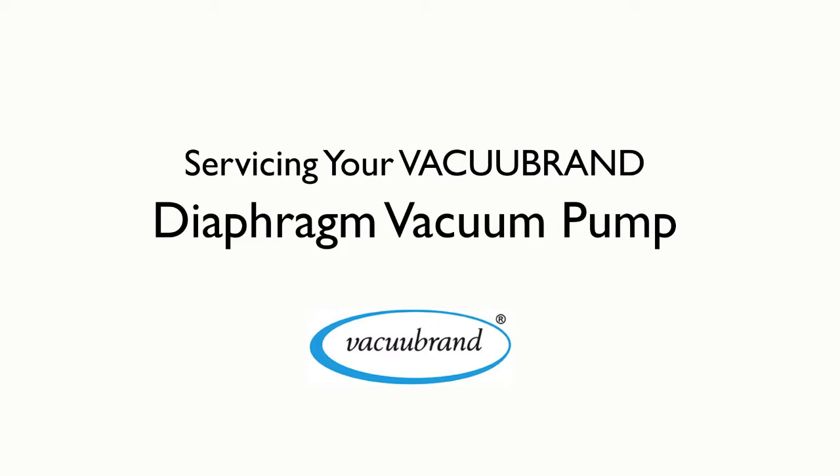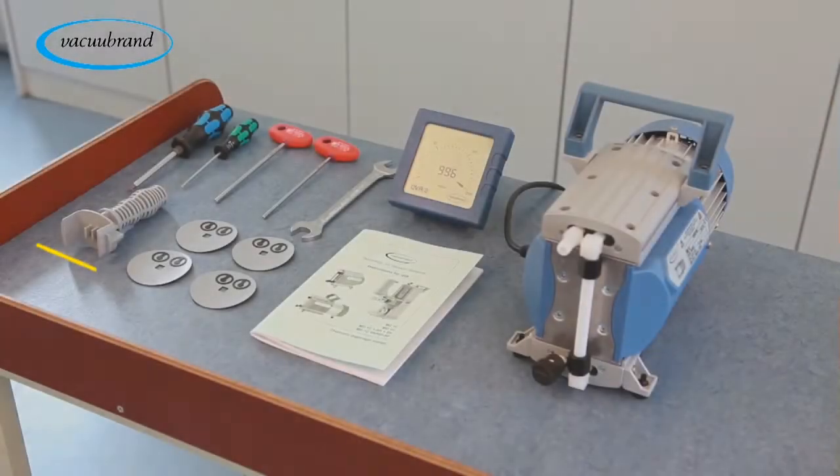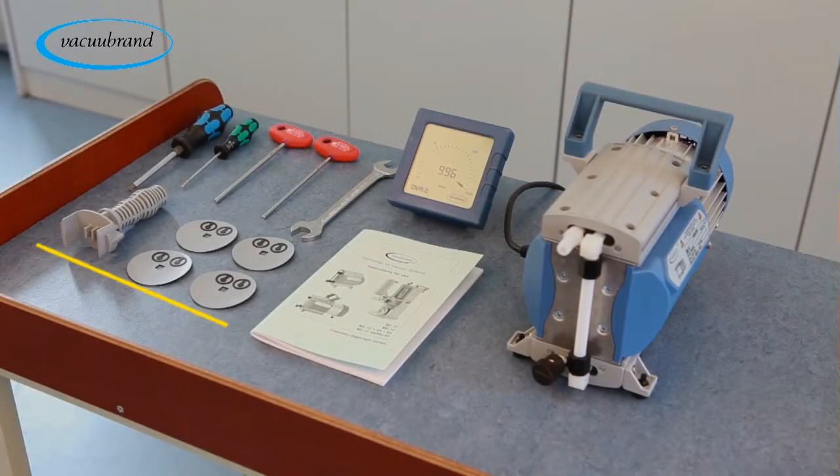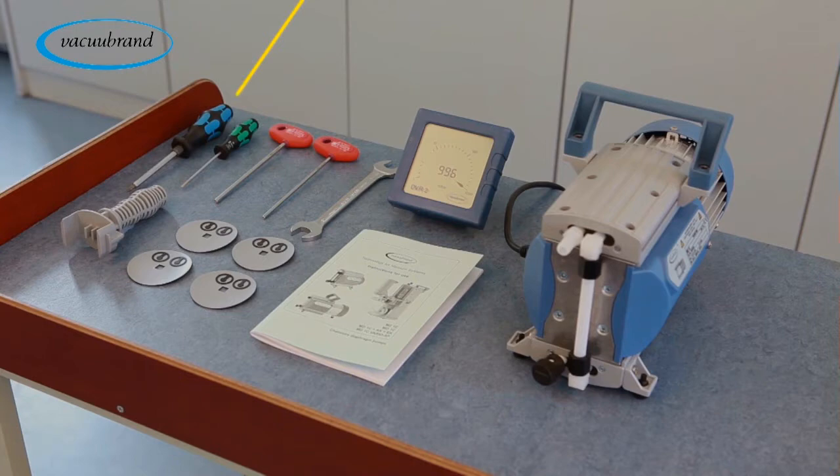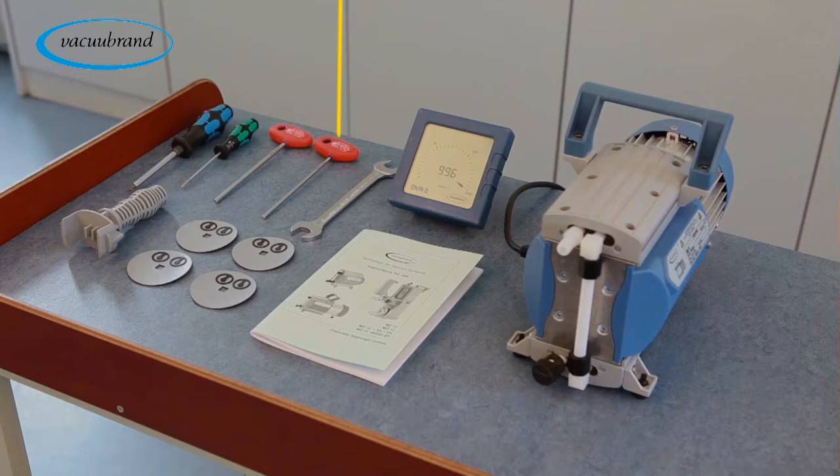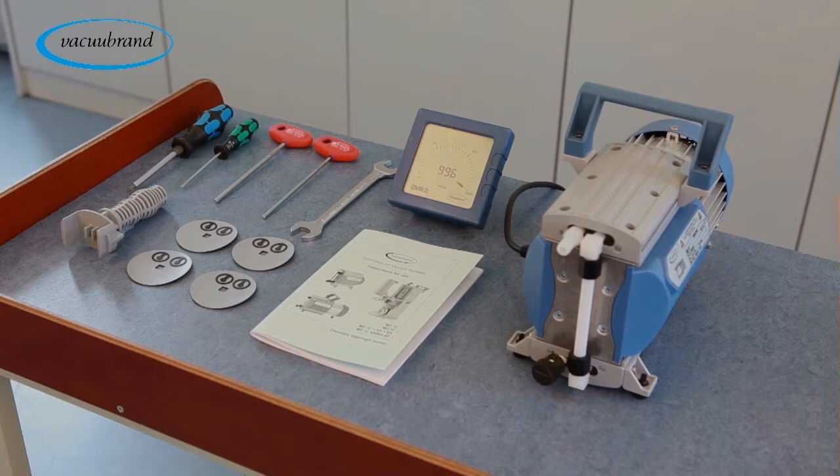To begin the service on your Vacuubrand diaphragm vacuum pump, you will need the following tools and accessories: a diaphragm service kit, a Phillips head screwdriver, a flat head screwdriver, a 4 millimeter Allen wrench, a 17 millimeter open-ended wrench, a vacuum gauge with hose barb connection, and 8 millimeter ID vacuum tubing.